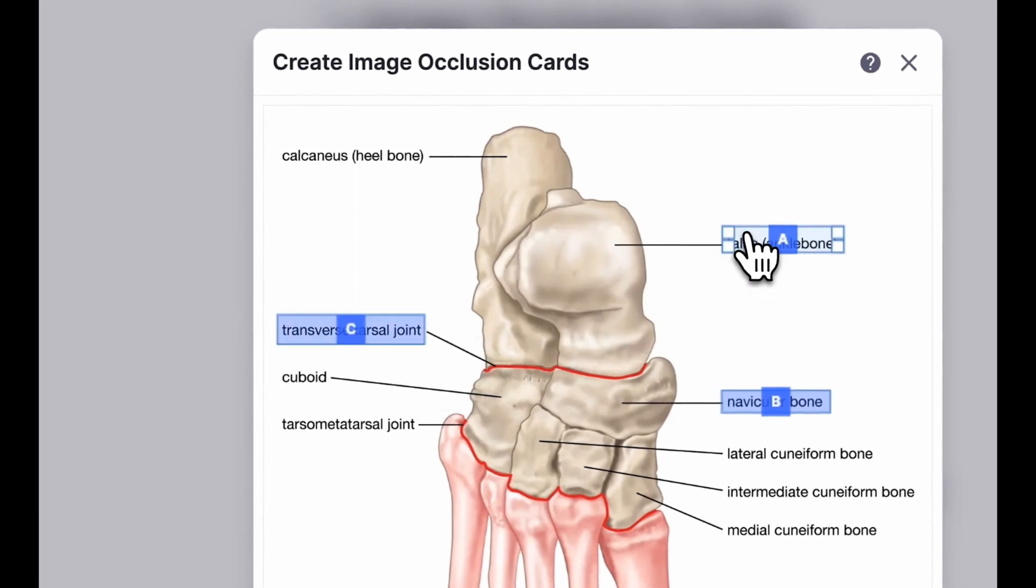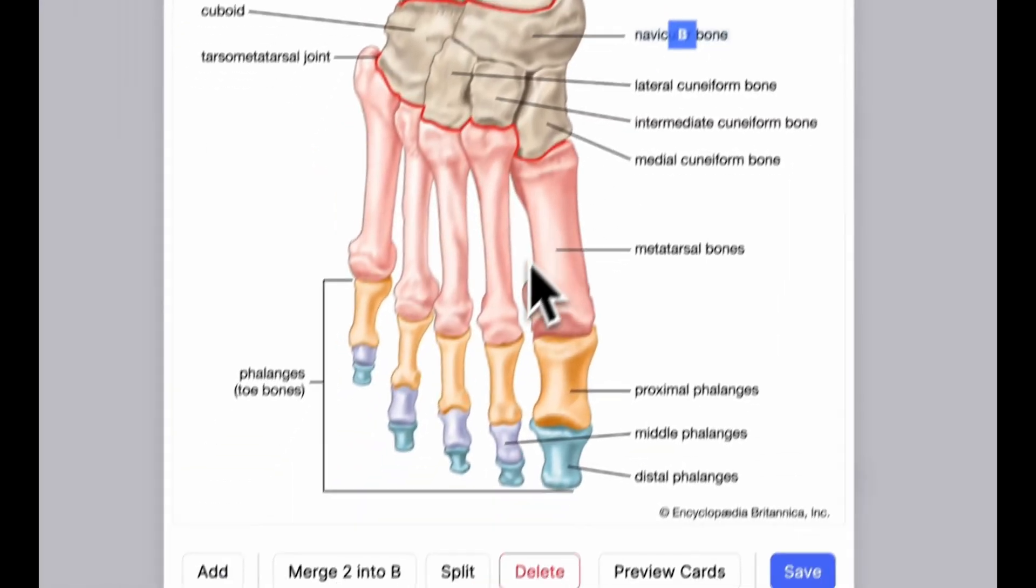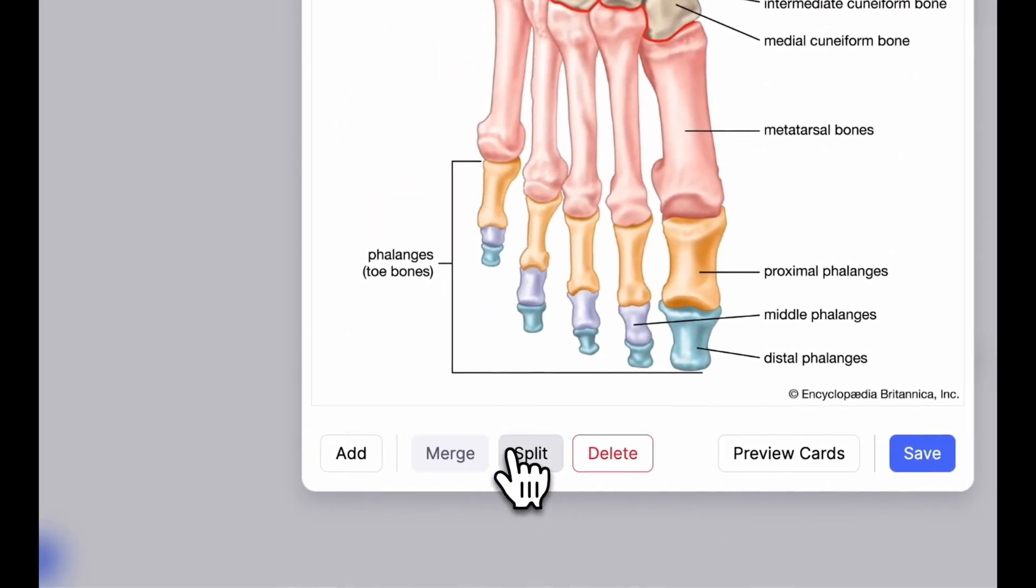You can merge occlusions together by selecting one, then holding shift and clicking another. Once you've selected all the occlusions you want to merge, click the Merge button at the bottom.